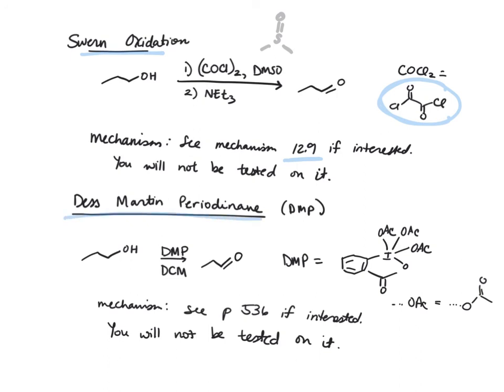Next, we have the Dess-Martin periodinane, and that has this following structure where we've got a hypervalent iodine atom with acetyl groups attached to it. And this serves also as a gentle oxidizing agent that transforms a primary alcohol into an aldehyde. The mechanism for this, or at least the key intermediate, is on page 536 of your book if you're interested, and know that you will not be tested on this mechanism either.